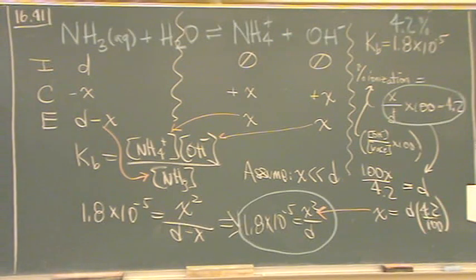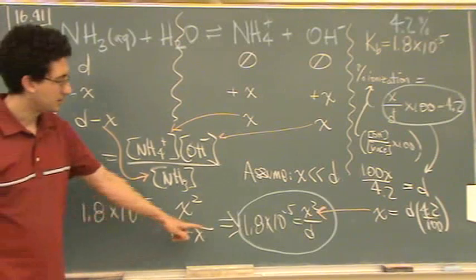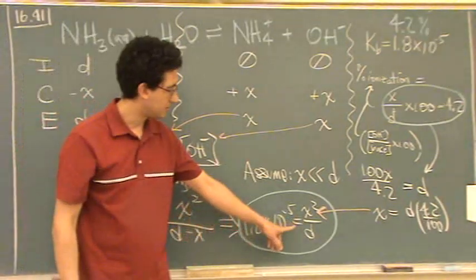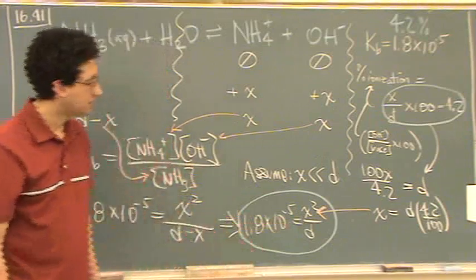Since we're assuming that x is really, really small relative to d, can we just say it's 1.8 times 10 to the negative 5 is equal to 1 over d? I guess x is really, really, really small.